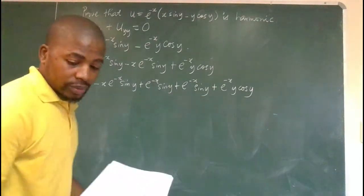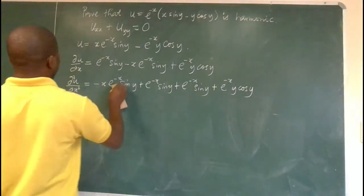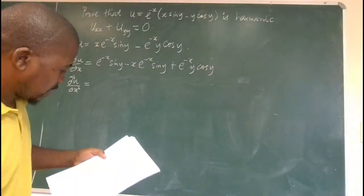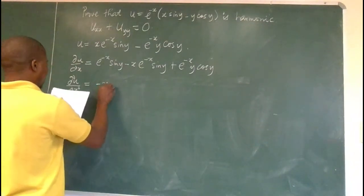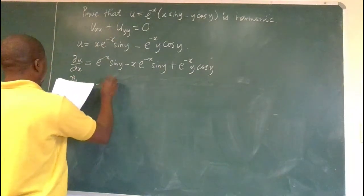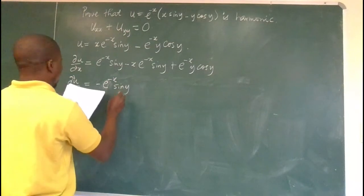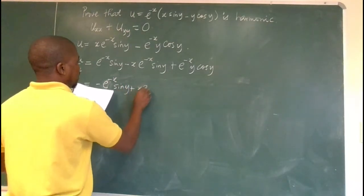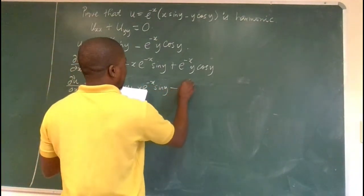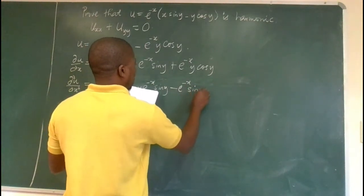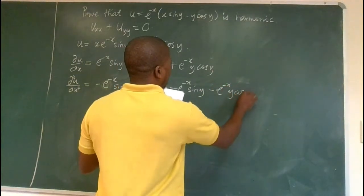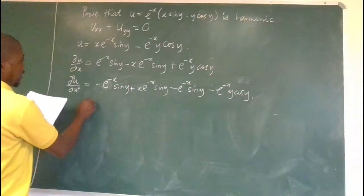Actually, that's not right — let me correct that. It should be minus x e to the power of minus x, plus e to the power of minus x sin y, plus x e to the power of minus x sin y, minus e to the power of minus x sin y plus y.